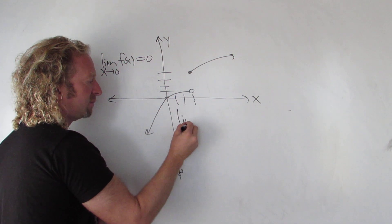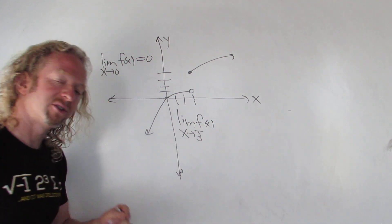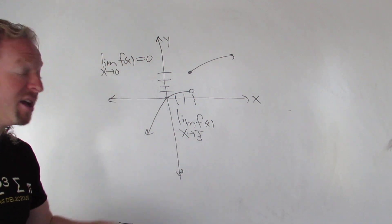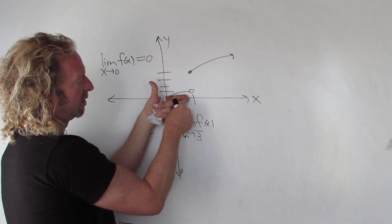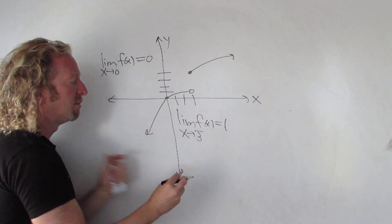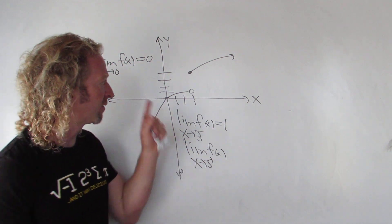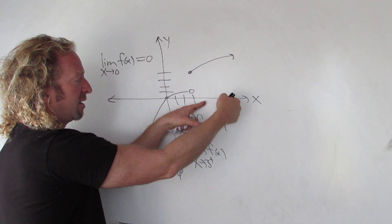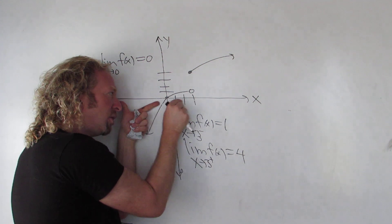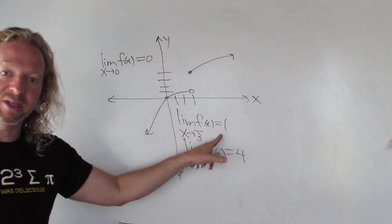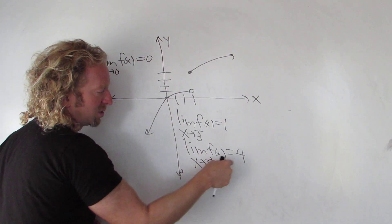Now let's approach 3. I'll put a little negative sign here — this negative sign means we're approaching only from the left. A plus sign means approaching from the right. So as the x value approaches 3 from the left, it looks like the y value is 1. Now approaching 3 from the right: as x approaches 3 from the right, the y value gets close to 4. So from the left the limit is 1, and from the right the limit is 4.